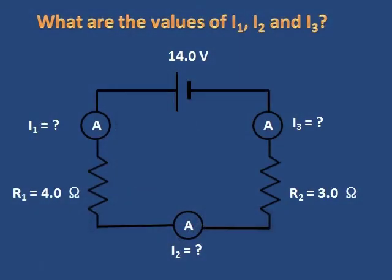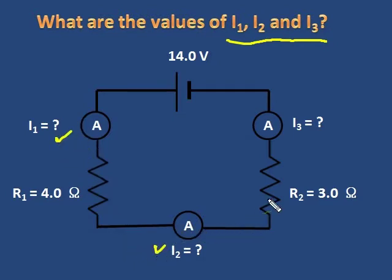The first question asks: what are the values of I1, I2, and I3? I look at this and realize it's a series circuit. Therefore, I1, I2, and I3 are all the same — they will have the same value. I1 will equal I2, which will equal I3. That's what happens in a series circuit.